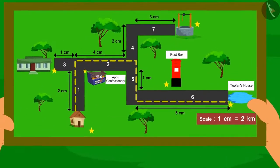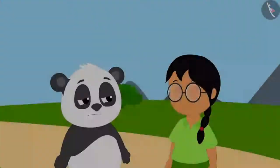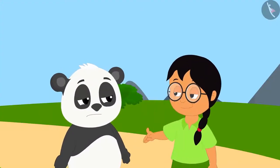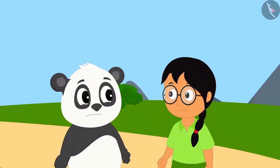As soon as Minu saw the map, she told Golu that he would have to go about 4 km more.